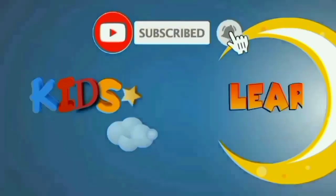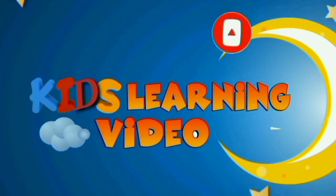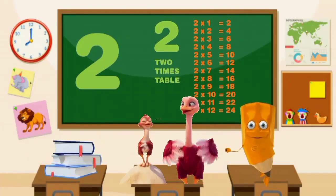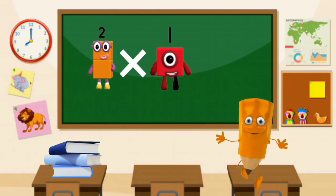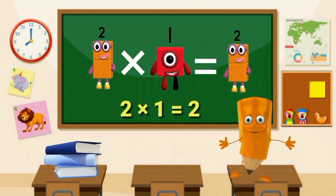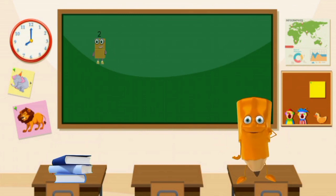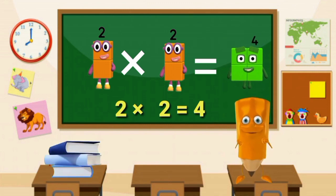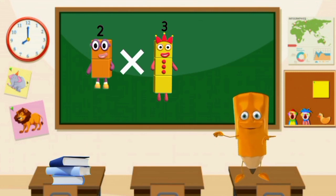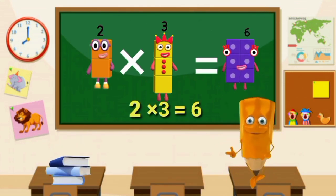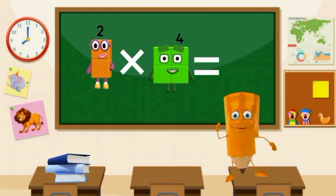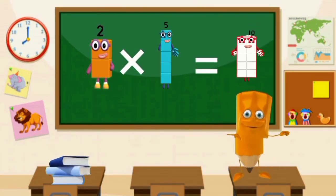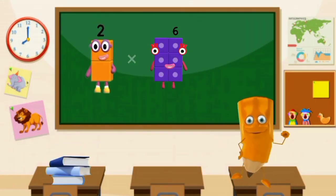Subscribe to our learning video channel. Hi friends. Now we will learn the table of two. Two ones are two. Two twos are four. Two threes are six. Two fours are eight. Two fives are ten. Two sixes are twelve.